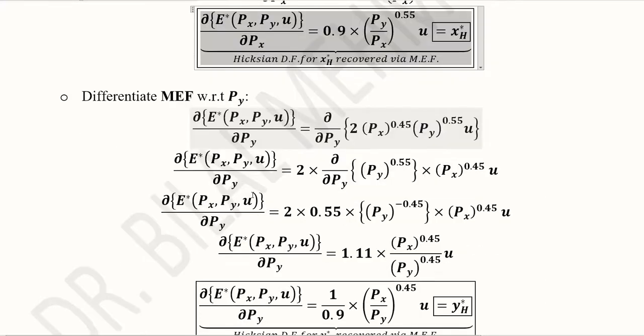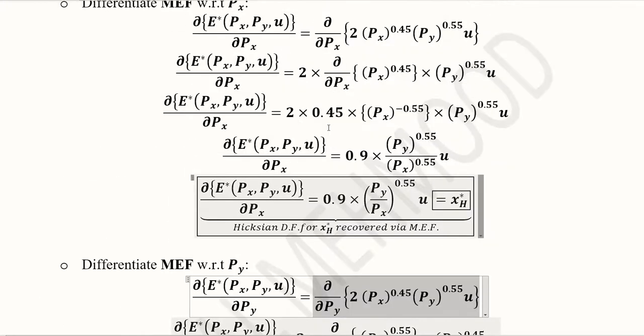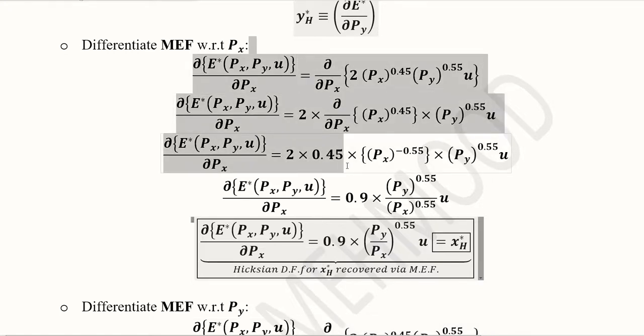Now, we can do the same process for the other good that is good y and for that we have to differentiate the minimized expenditure function with respect to py or its own price. So, when we did this, we have this simple differentiation, which you can understand by keeping in your minds what we have done in the previous case here. So, it is very much similar.